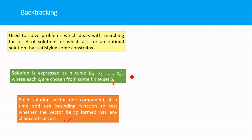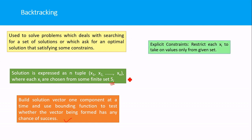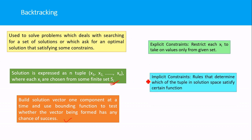There are two types of constraints. The explicit constraint restricts the value of each xi to be chosen from Si only. The implicit constraint determines which tuples in the solution space satisfy a certain function — this will be better understood when explained with an example.